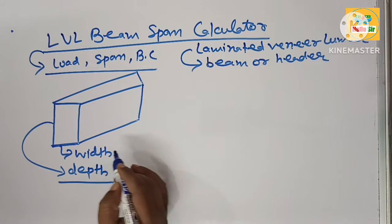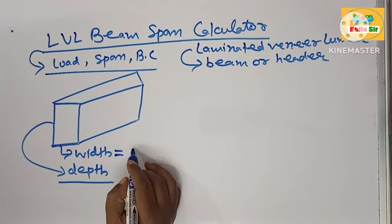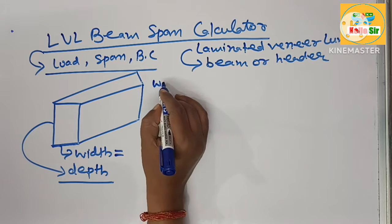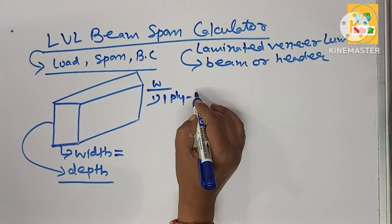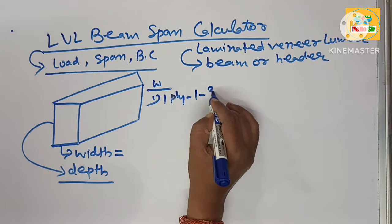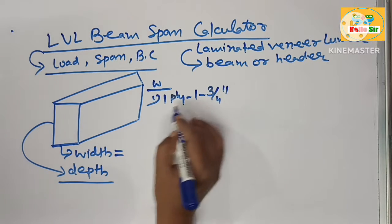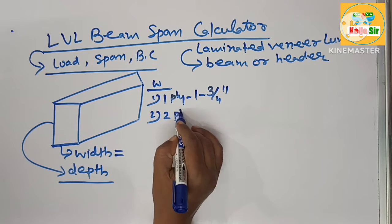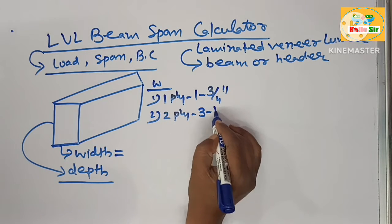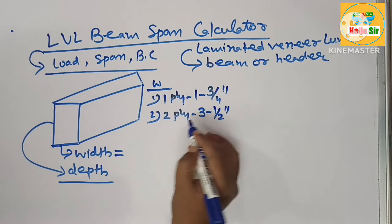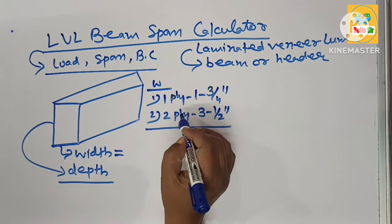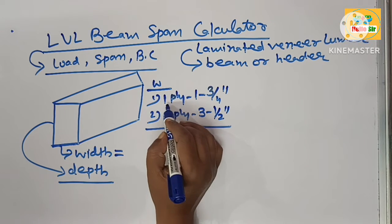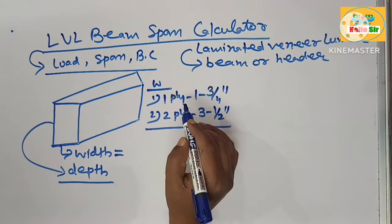Width can be single ply, meaning one ply of thickness 1 and 3/4 inches, or 2 ply of 3 and 1/2 inch thickness. Two ply LVL is made by sandwiching two single ply LVL beams.